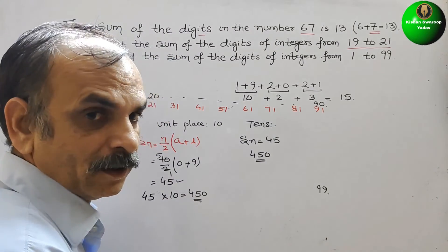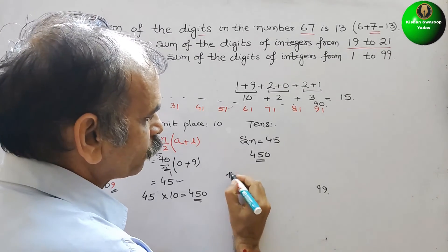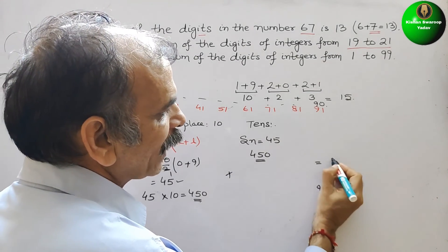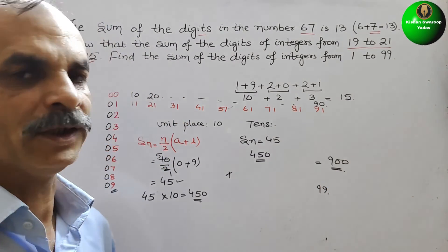Just like this. So therefore, if you sum this up, 450 plus 450, you will get 900 as your answer. So like this we have to do it.